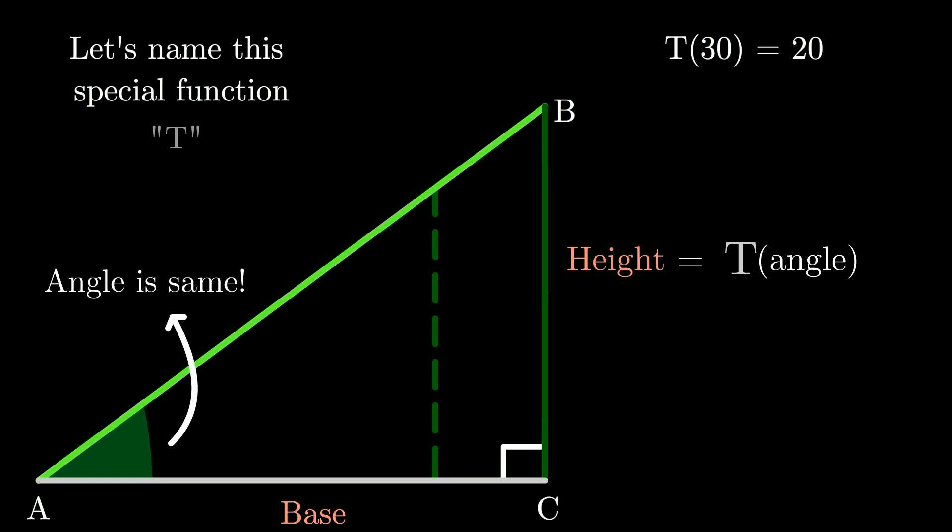Well, the only other thing that is changed apart from the height is the base of the triangle. If we increase the size of the base, the height also increases, provided the angle is kept the same. This means that we need to include the base as a factor in our T function so that we can get the height of the triangle just by getting the angle. But how do we do that?